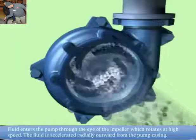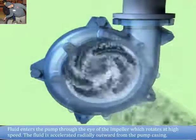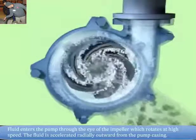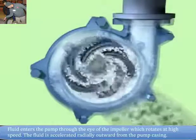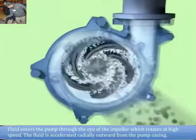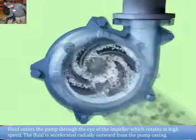Fluid enters the pump through the eye of the impeller which rotates at high speed. The fluid is accelerated radially outward from the pump casing.